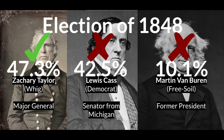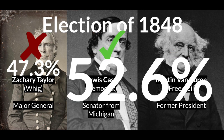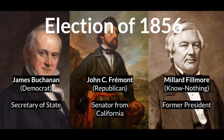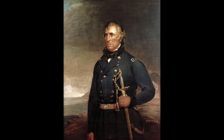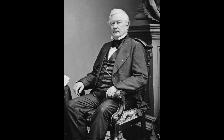Van Buren's Free Soil candidacy definitely affected the election, as the former Democratic president likely took votes from the Democratic nominee Louis Cass. Because of this, Cass lost, giving the election to Zachary Taylor. That all changed in 1856, when another former president made a third-party bid for the White House. Zachary Taylor had died not long after he was elected, and his vice president, Millard Fillmore, had taken over the job. But Fillmore's presidency would mark the end of the Whigs.